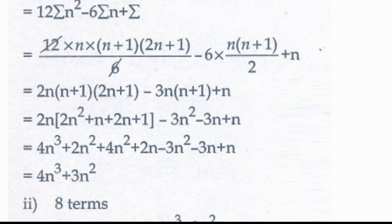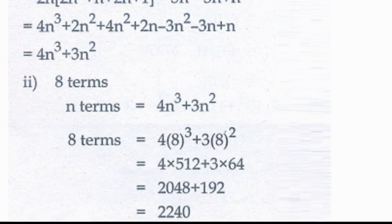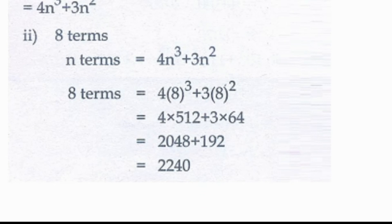Now we have 8 terms, so we apply n equals 8: 4 times 8 cubed plus 3 times 8 squared. Since 8 cubed is 512 and 8 squared is 64, we get 4 times 512 equals 2048, and 3 times 64 equals 192. So 2048 plus 192 equals 2240. This is the sum. Thanks for watching — if you have doubts, comment, like, and share.